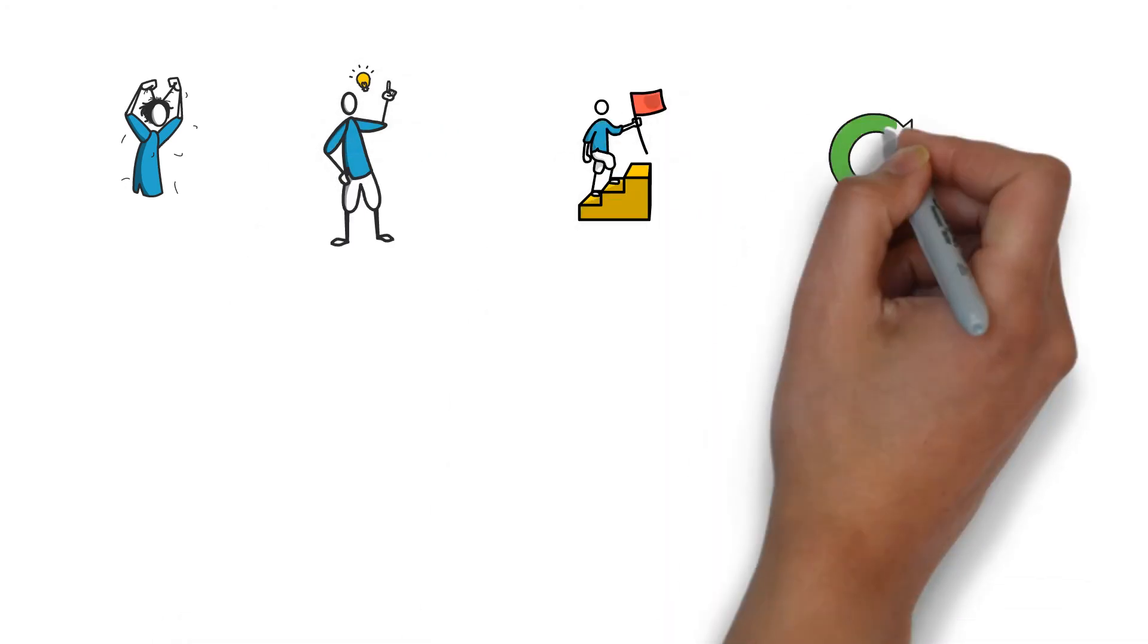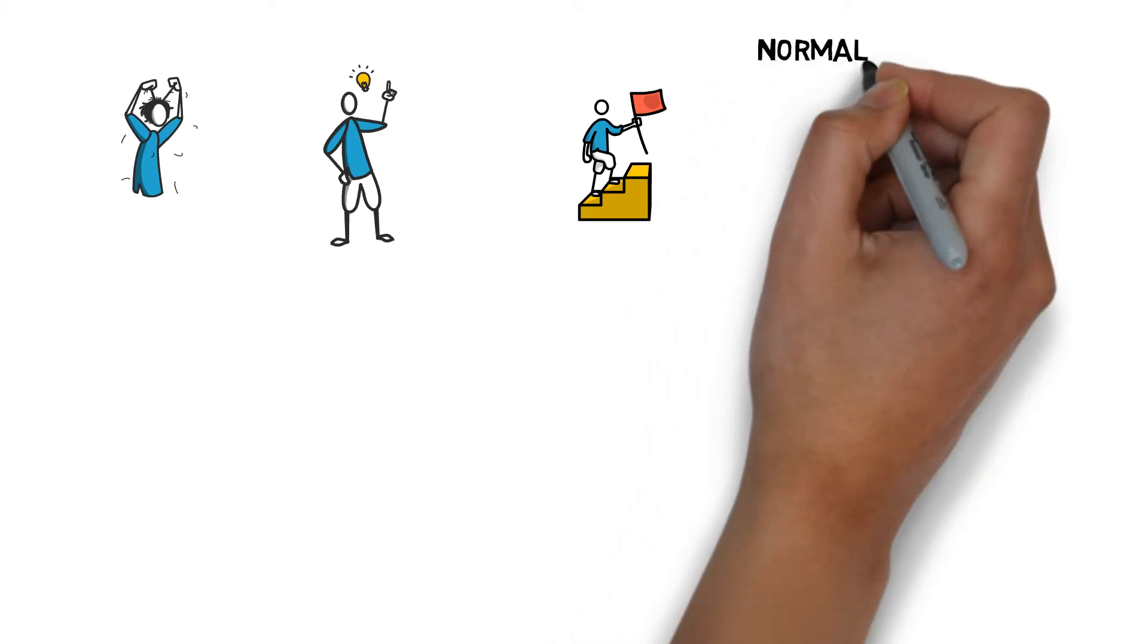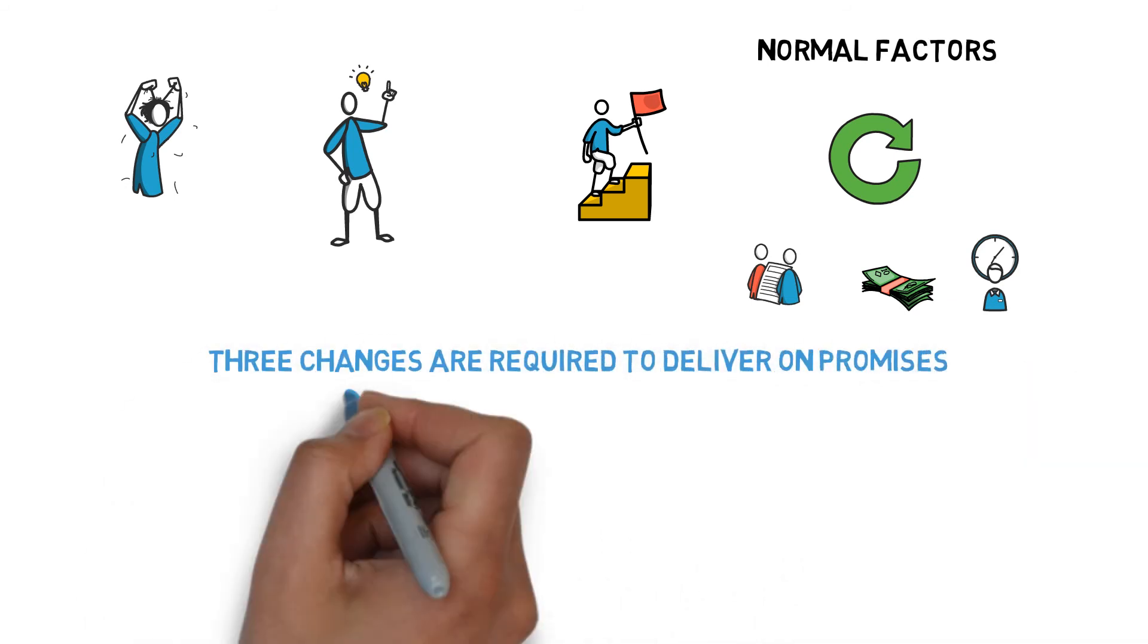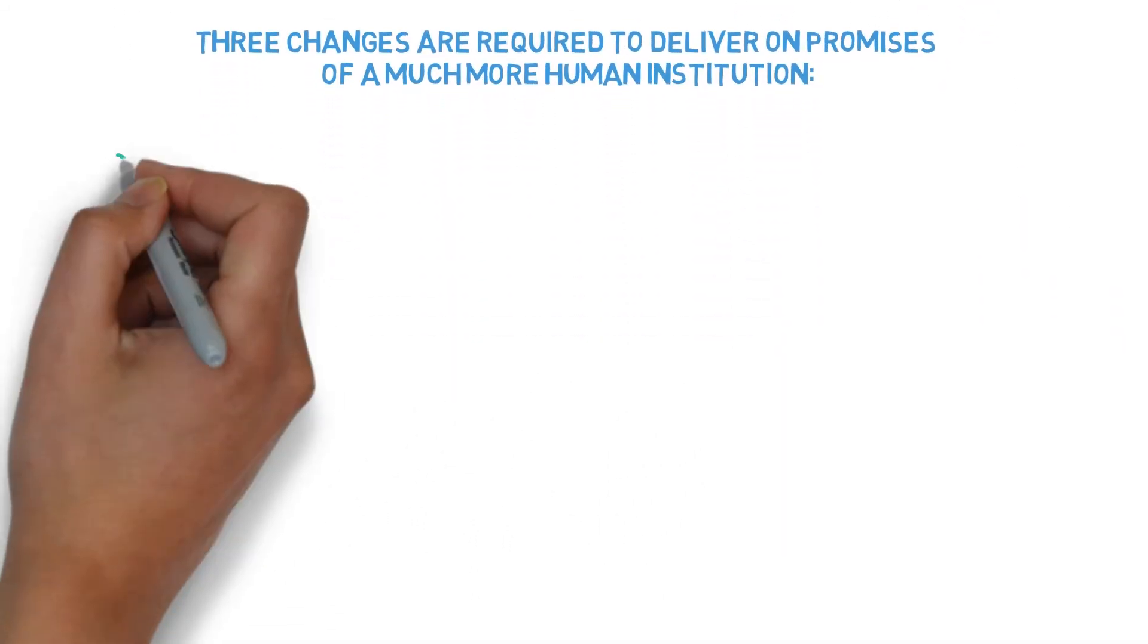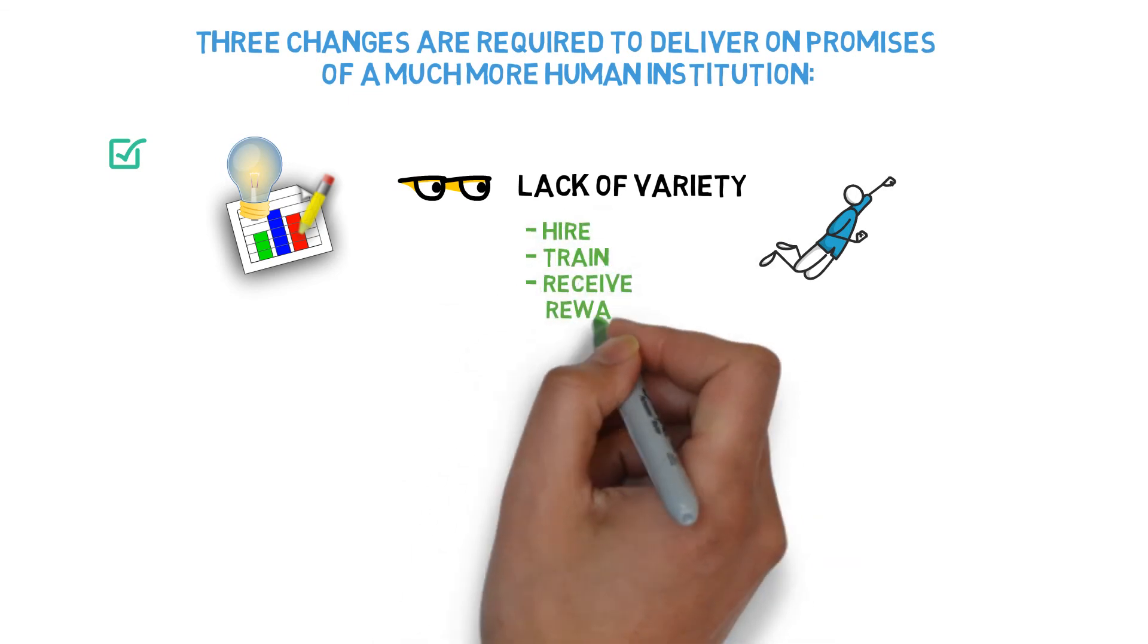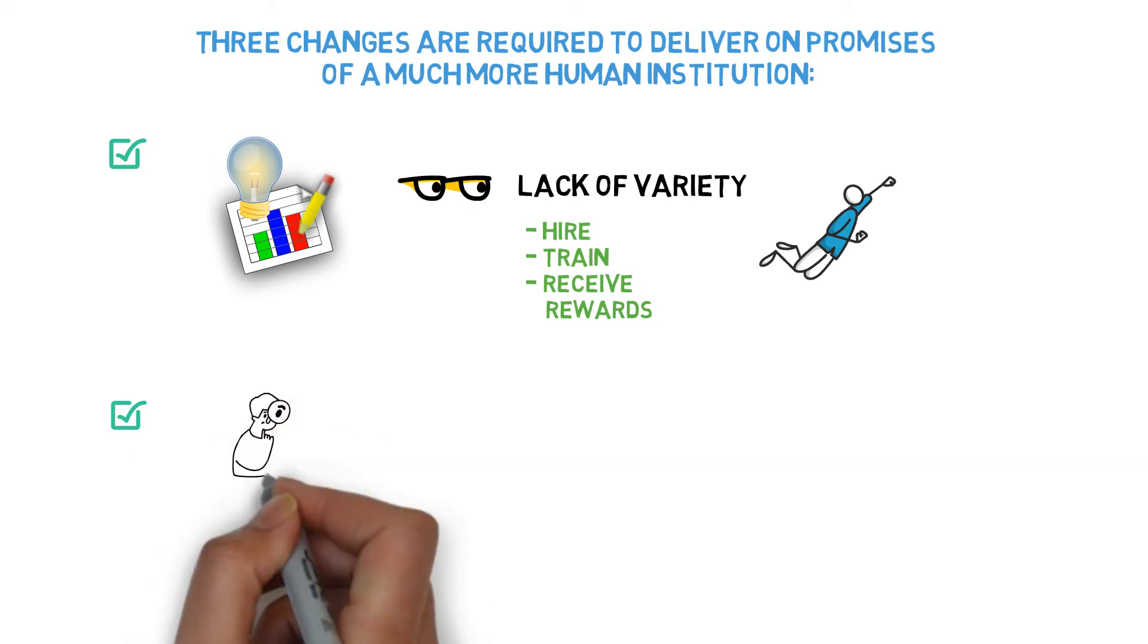The most difficult component of this activity is putting it into practice. Figure out just how many postponed efforts are worthwhile reviving and to what degree. In addition to the normal factors, results, expenses, timescales, and risks, evaluate how resilient and eager the organization is to put this learning into practice. At least three changes are required to deliver on promises of a much more human institution. From projects to interventions, instead of beginning programs to draw attention to problems like a lack of variety, start with a predisposition to act. For example, by altering how you hire, train, or receive rewards.